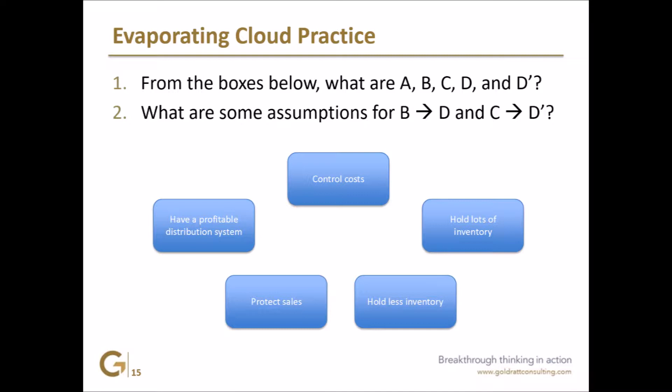Ultimately, no matter what we do, there's no distribution system out there that's trying to lose money, generally speaking. Okay, what's B? So the need of the upper branch, let's say. Control cost. Okay. Good. Agree?